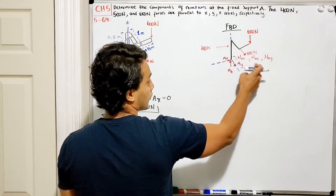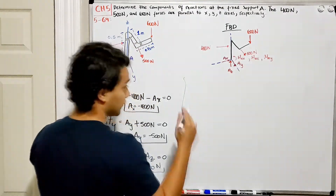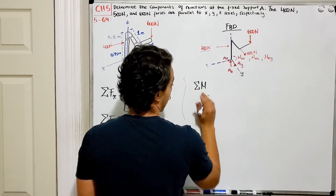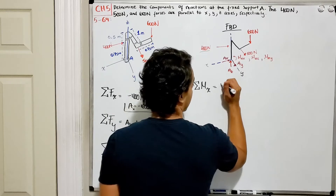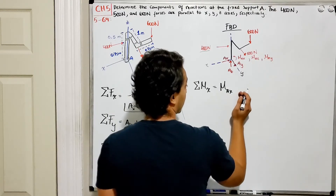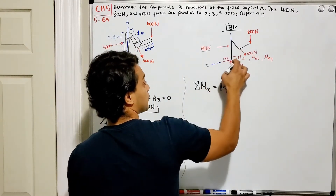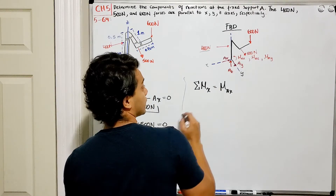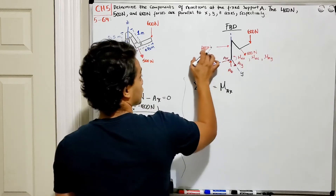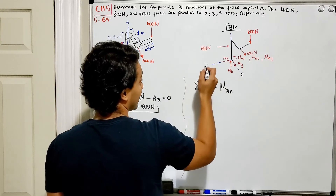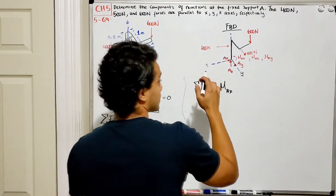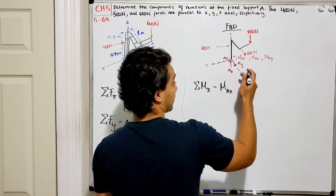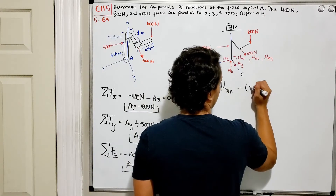What we have left are the moment of AX, moment of AZ, and moment of AY — so we need to do the summation of moments. We'll do the summation of moments with respect to the X axis. The reaction forces AX, AY, and AZ all pass through the X axis, so they produce zero moment. The 400 Newtons is parallel to the X axis, so it also contributes nothing perpendicular. The 500 Newtons, however, is perpendicular and will cause a moment.